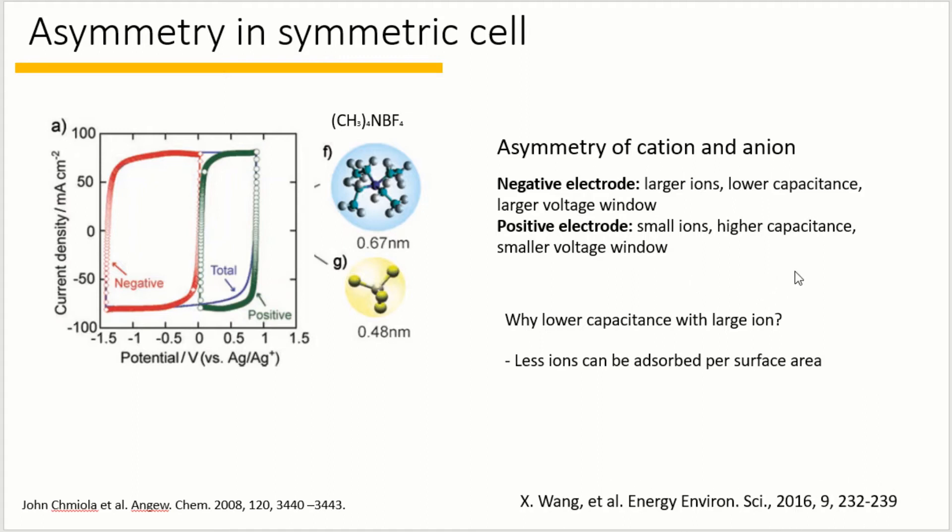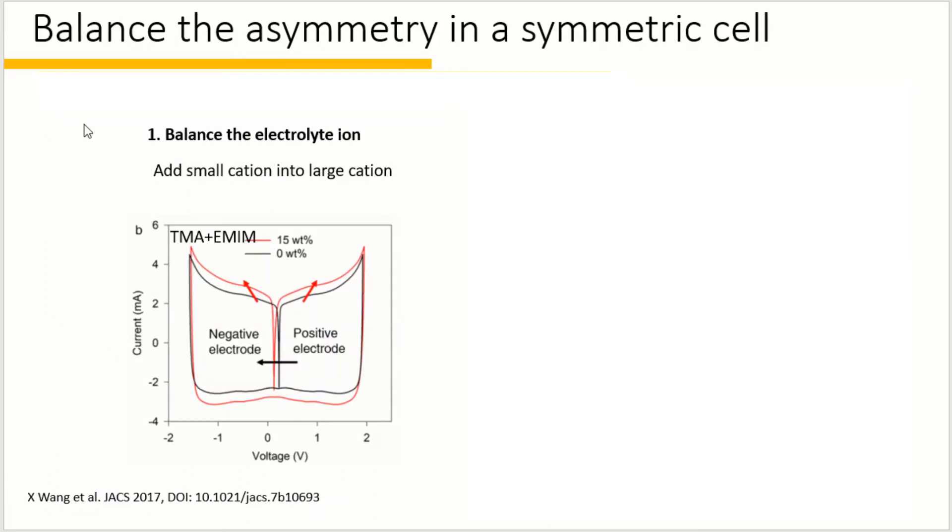To balance the charge, the voltage window of the negative electrode should be larger than the positive electrode. Now you see why there is asymmetry even when using the same material and same mass loading. Asymmetry will certainly shrink the voltage window of the full cell because one electrode might be overcharged. There are two ways to solve the problem.